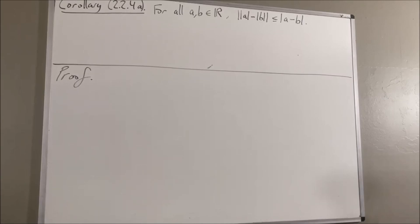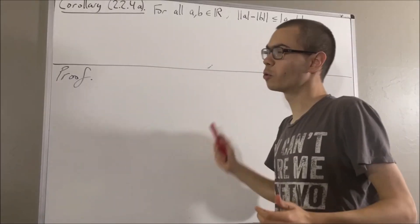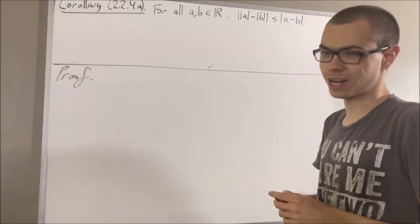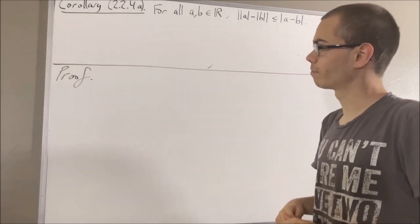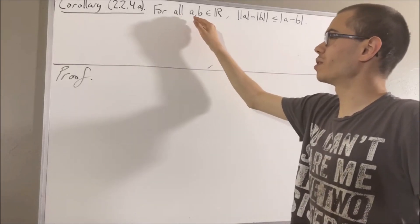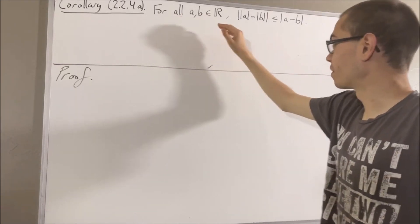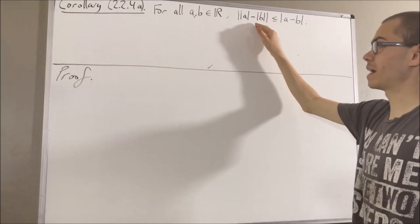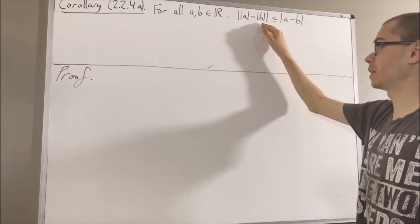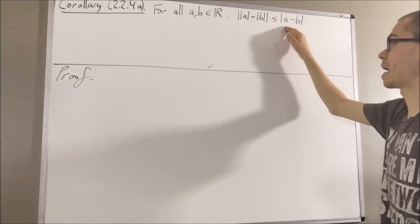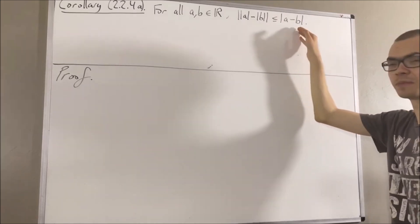Hello! In this video, we are going to prove the following corollary of the triangle inequality. For every two real numbers a and b, the absolute value of the quantity absolute value of a minus absolute value of b is less than or equal to the absolute value of a minus b.